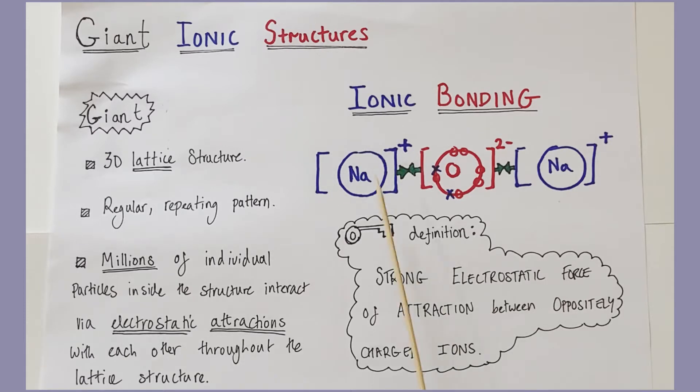So these positive cations attract towards this negative anion in the centre. These sodium ions attract that oxide ion and we form two strong ionic bonds, which are my green arrows here and here, which are strong electrostatic forces of attraction between the oppositely charged ions.